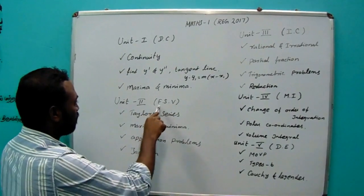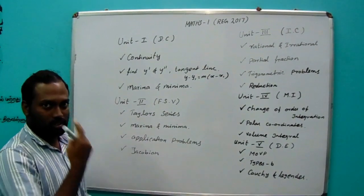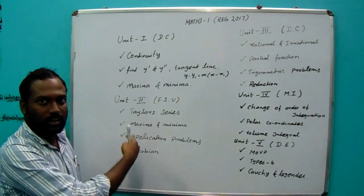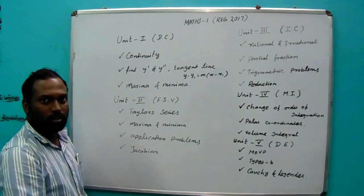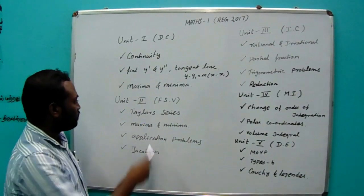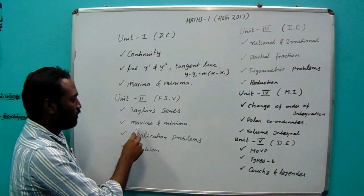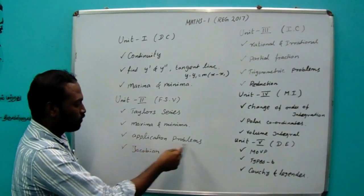Then Unit 2: functions of several variables. 16 marks — full on. It will be easy to do. Taylor series and maximum minimum application problems.